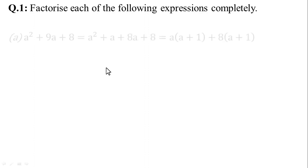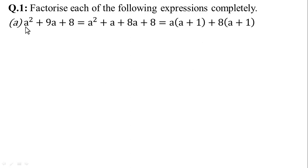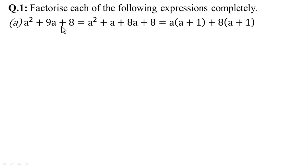In Question No. 1, factorize each of the quadratic expressions completely. In the first part, given that a² + 9a + 8. Factorization means midterm breaking — the midterm is broken into two parts where multiplying gives the last term and adding gives the midterm.